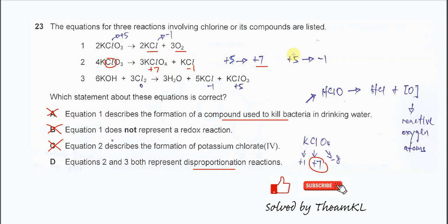Positive 5 to negative 1 is reduction. So now the chlorine undergoes oxidation and reduction at the same time. So the second statement, yes.